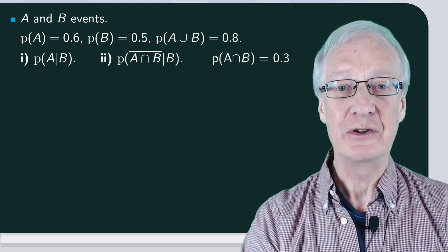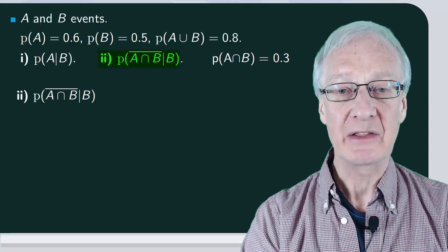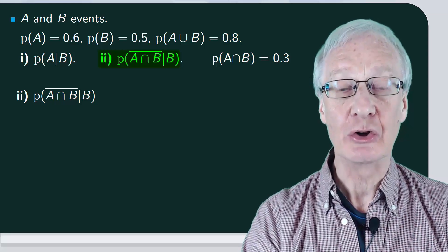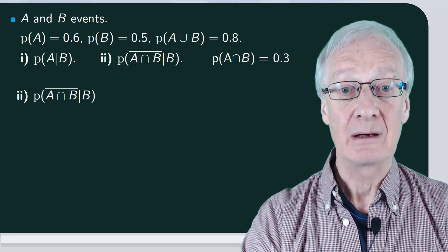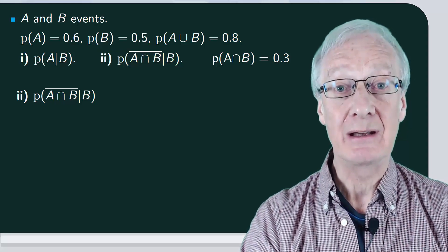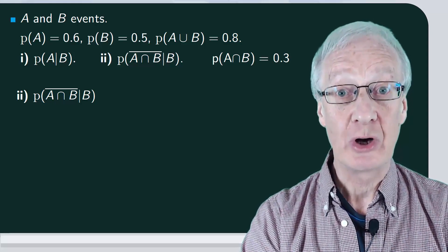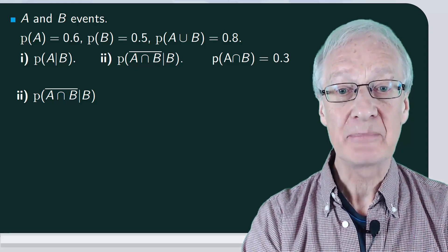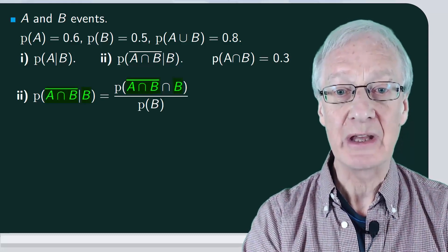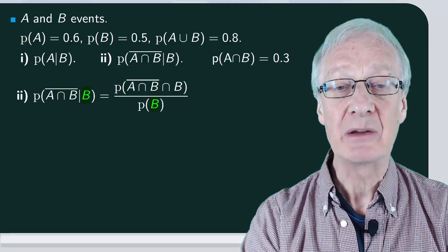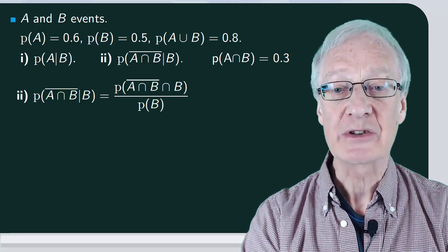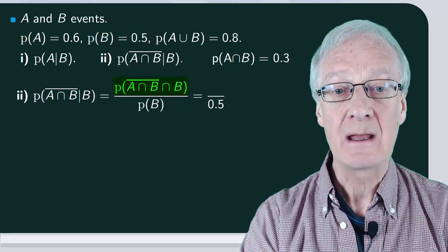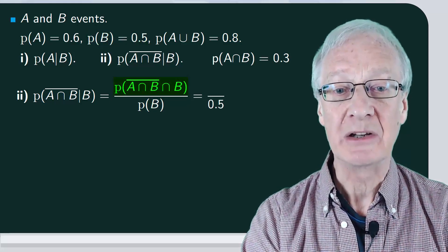Now we turn to the second question and calculate the probability of the complement of A, intersection B, conditional on B. Although we can reason this in a number of different ways, we'll use the most common approach. By definition, the conditional probability is the probability of the intersection of the events divided by the probability of B. So on the bottom we have the probability of B, which is 0.5, and we need to find the probability that goes on top.